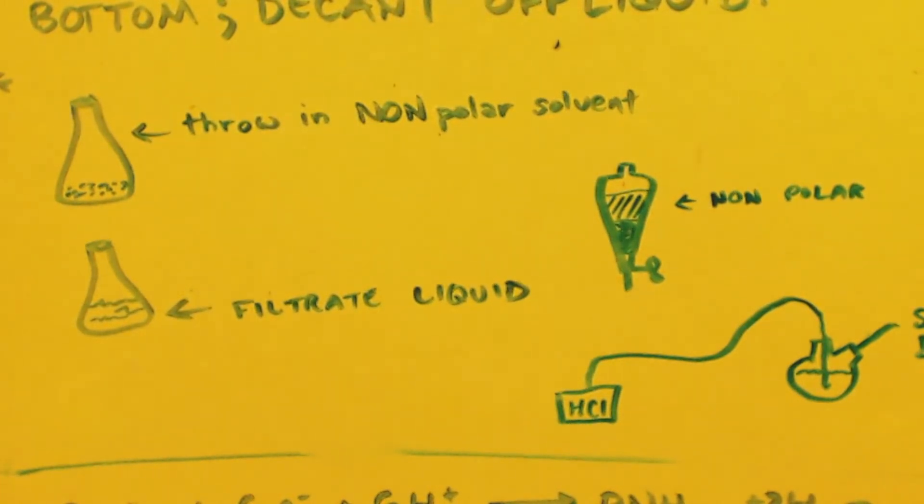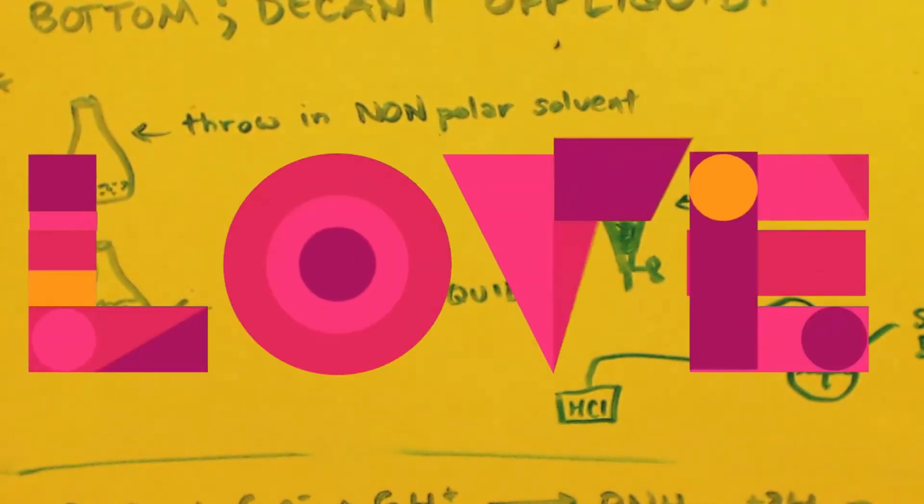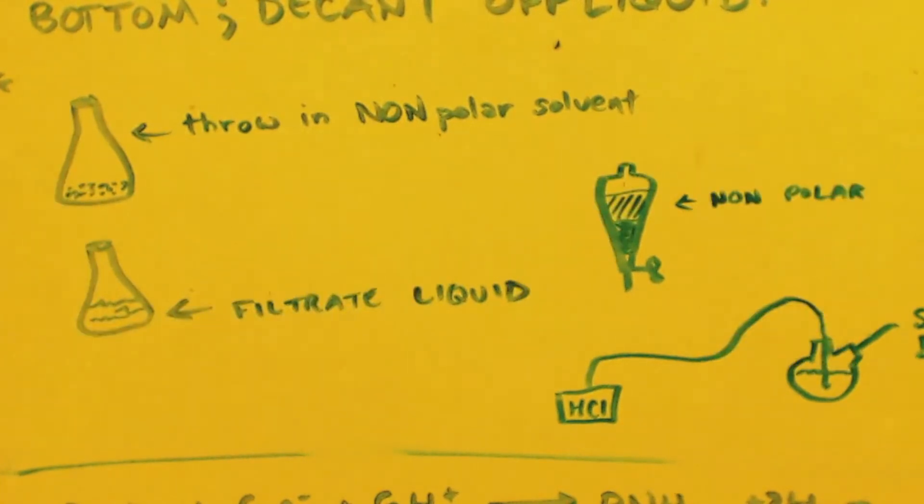So you're going to take this mother liquor, put it in a sep funnel, and there's probably enough water in there for it to form two layers. So you know the deal. You shake it up and vent it, shake it up, vent it, shake it up, vent it, let it sit for 15-20 minutes. Then drain out the water and save it. Take the water layer and save it. Take the non-polar layer and set it aside. That's your mother liquor.